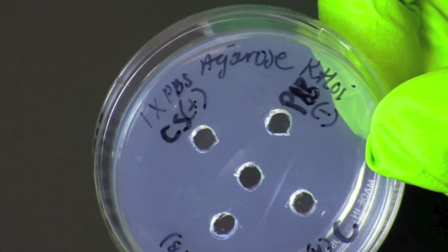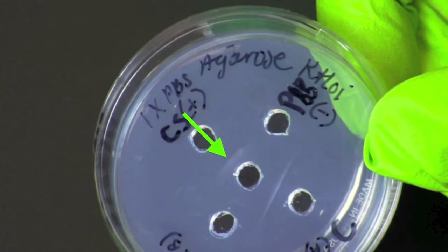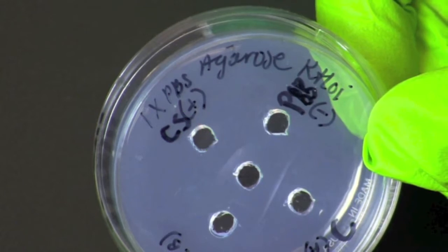Examine the plates each day until a visible white line has formed in the area between the hole where the positive control was added and the hole where the anti-chicken antibodies were added.